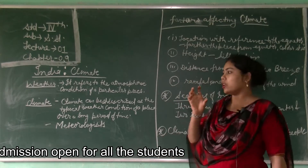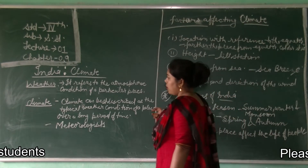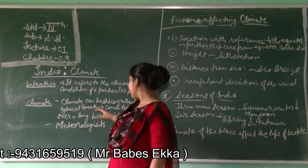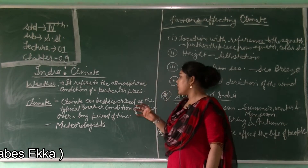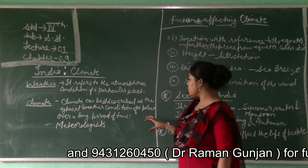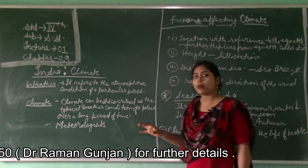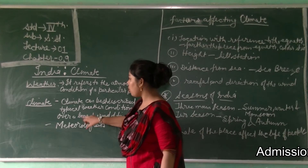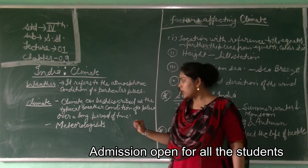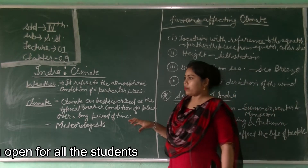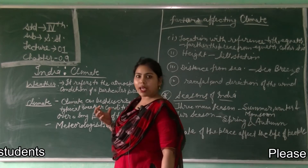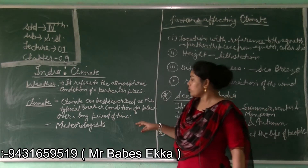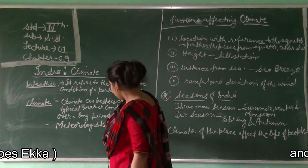Now we will see climate. Climate can be described as the typical weather condition of a place over a long period of time. Climate is the condition of weather over a long period of time. When the climate changes for a short period of time, it is called a season.